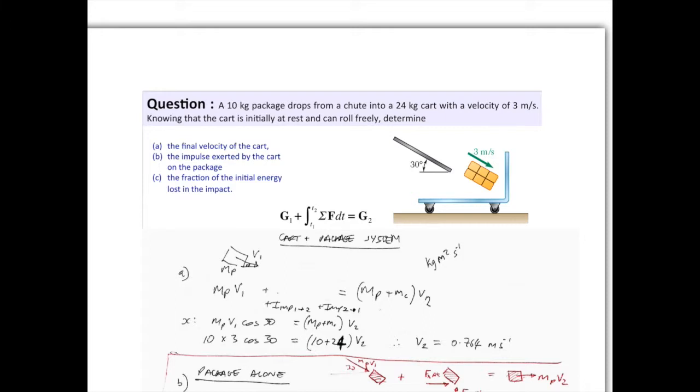Now, we know that the cart is constrained to move in the x-direction, so we're only going to consider the initial speed of the package in the x-direction as well. So we look at mp·v1·cos30. That's our initial momentum of the package. And equate that to (mp + mc)·v2, and that's going to be in the x-direction. And by equating those two, we can find out quite easily that the speed of both the cart and the package combined after the collision is 0.764 m/s.